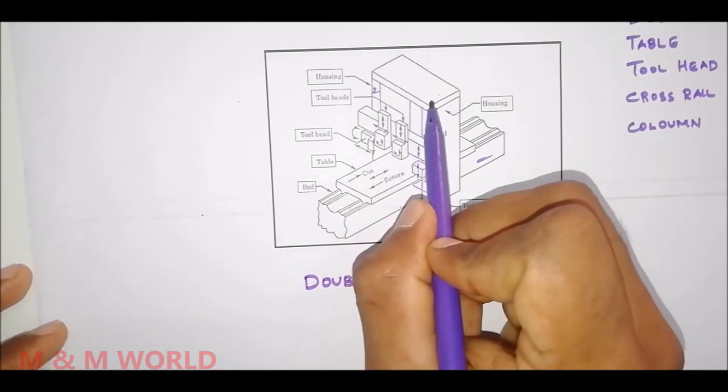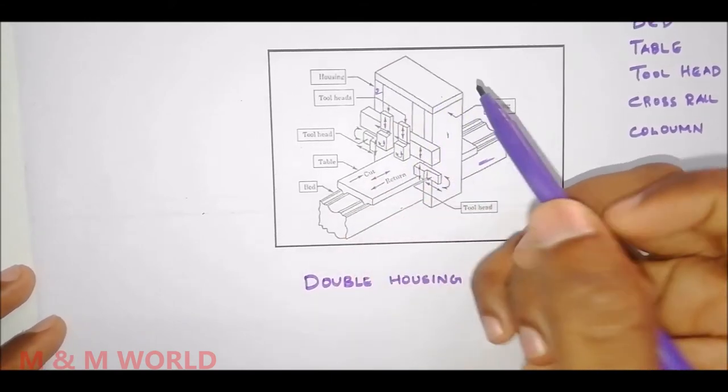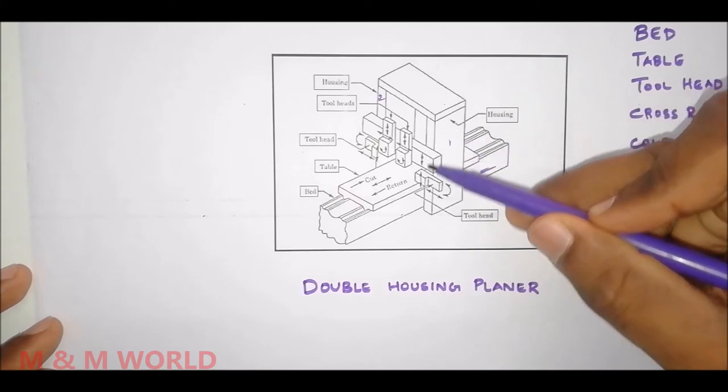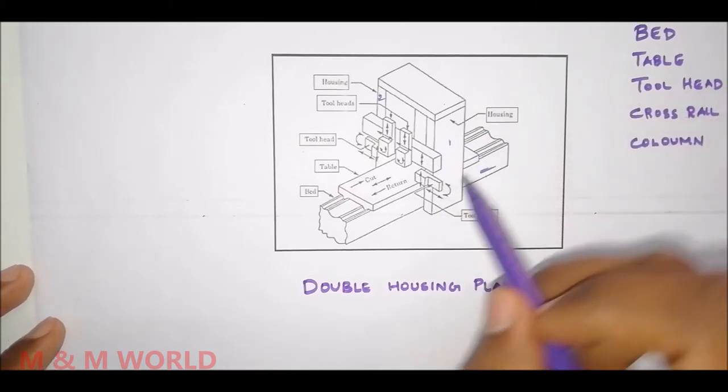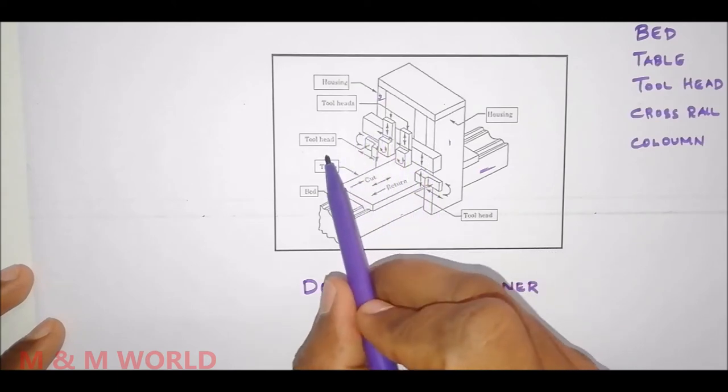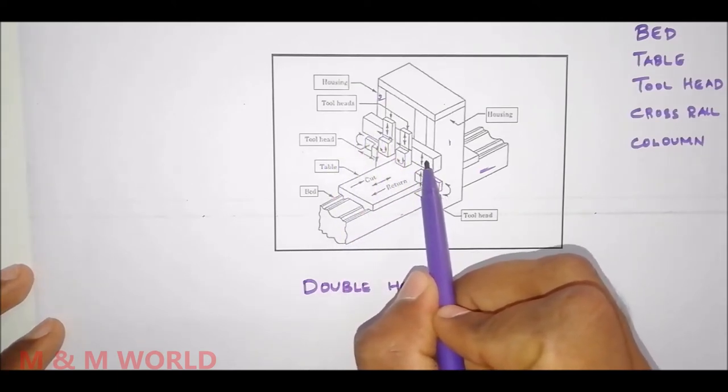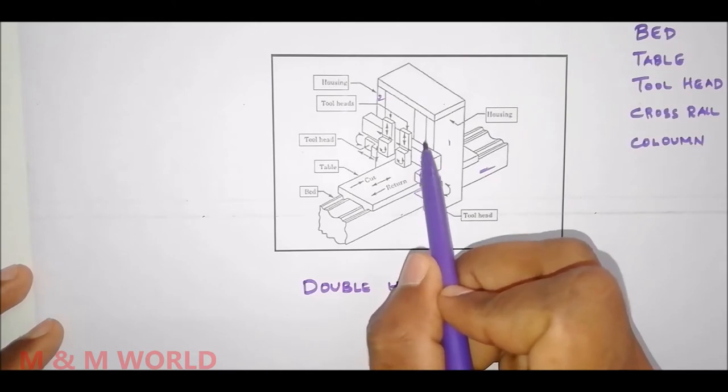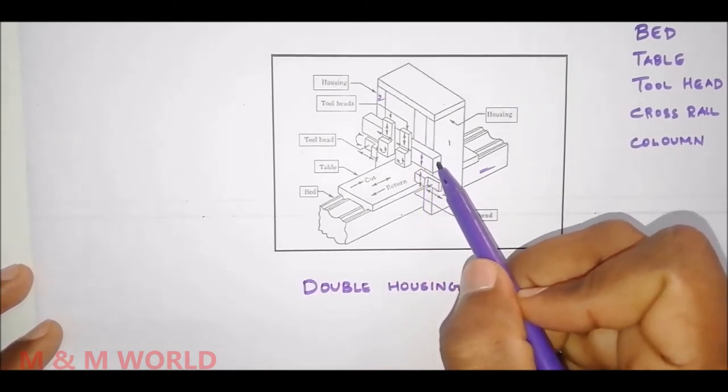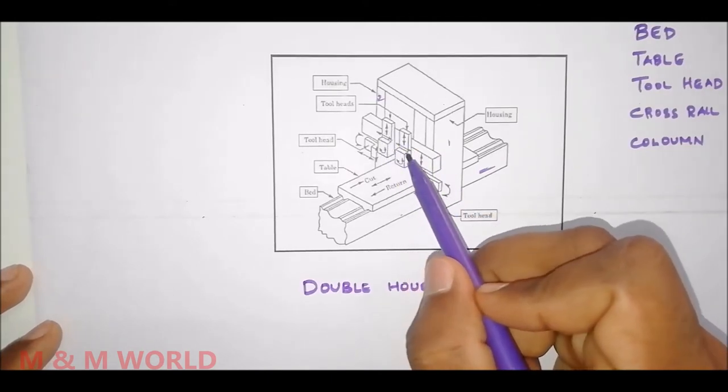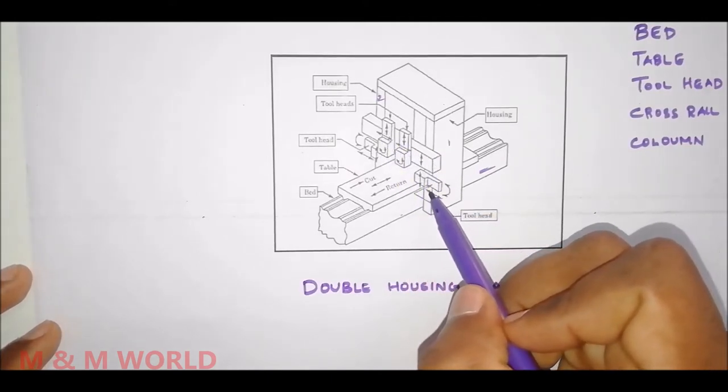The front face of the column has a smooth front face, and that face is housed with the cross rail. This cross rail can be moved up and down or vertically through the face of this column. We have tool heads connected to the cross rail as well as on the housing.